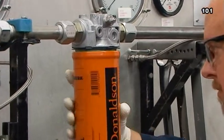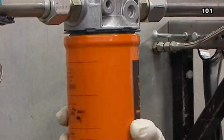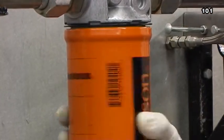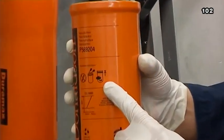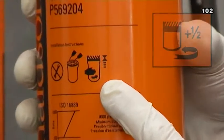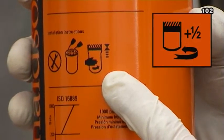As the sixth step, install the spin-on filter, spinning it on until the top of the gasket first contacts the sealing surface. Then for final tightening, follow the guidance of the icons which appear on the filter housing. Do not over-tighten.